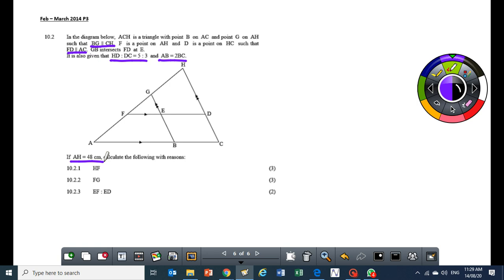We need to determine the length of HF. Now if I want to determine the length of HF, I already know that AH is equal to 48 and HF is part of AH. It means I am going to need a ratio for me to determine the length.